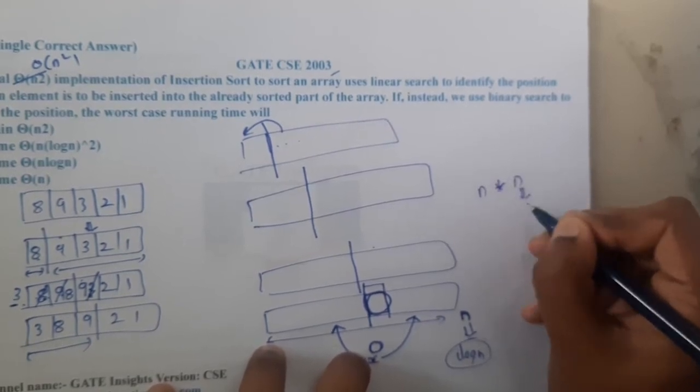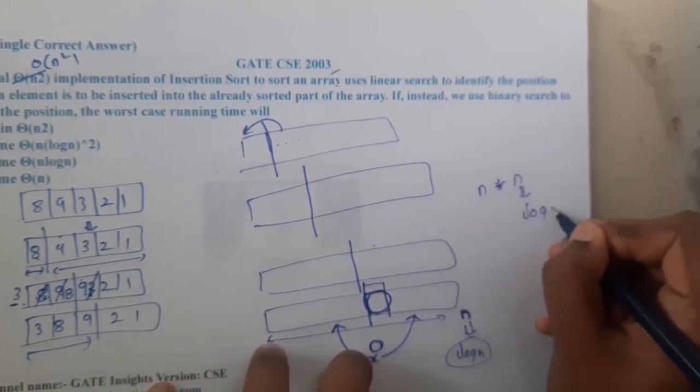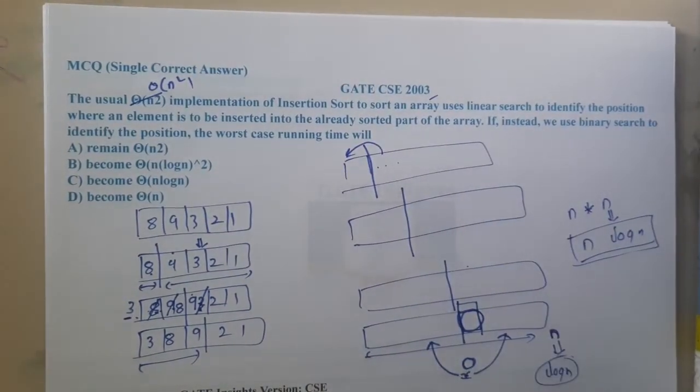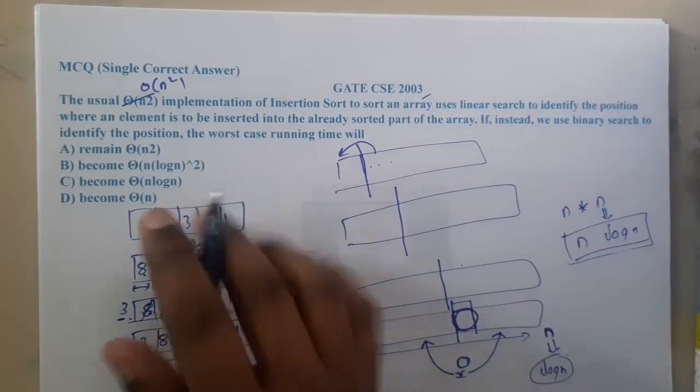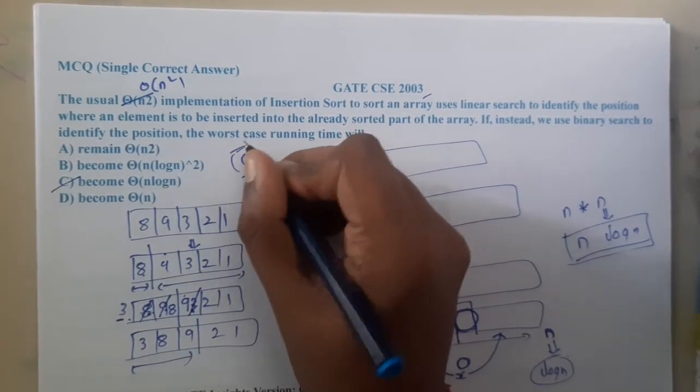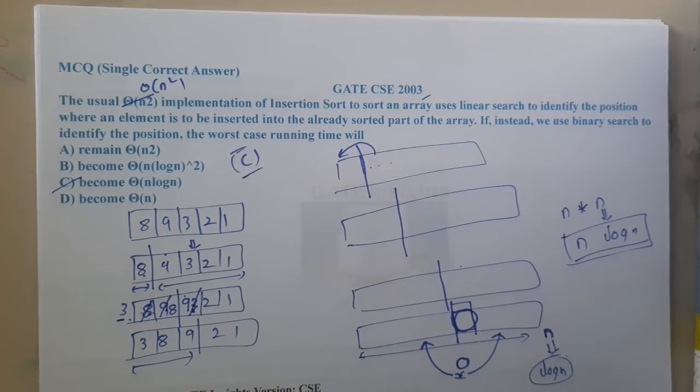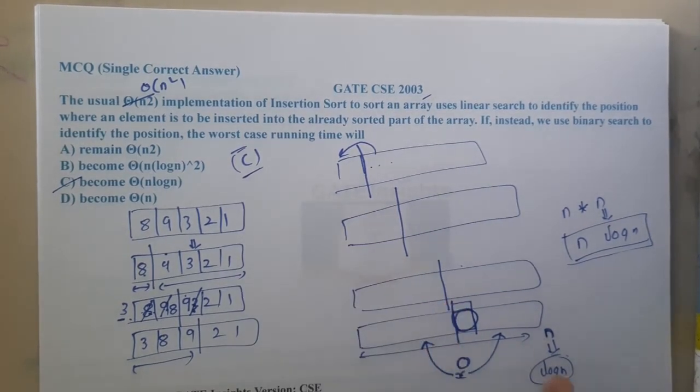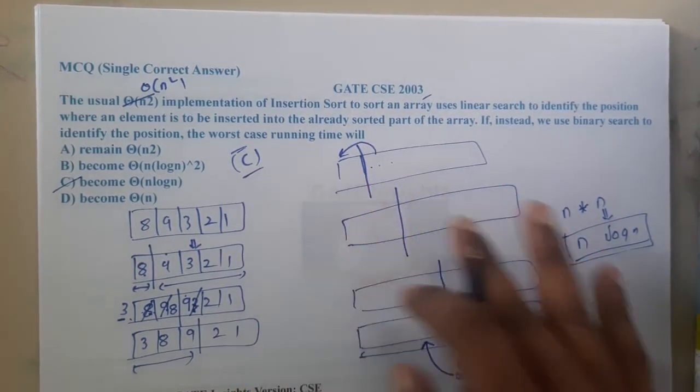So the updated cost, if you are modifying the insertion sort to work with binary search, it will be n log n. So C will be the answer. It's a quite simple question, but the only thing is you should have a clear conceptual idea of how exactly insertion sort will work and how exactly binary search will work.